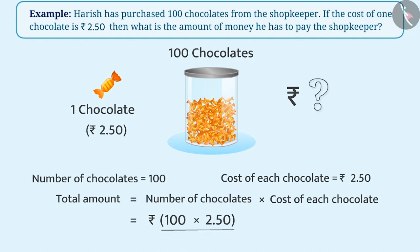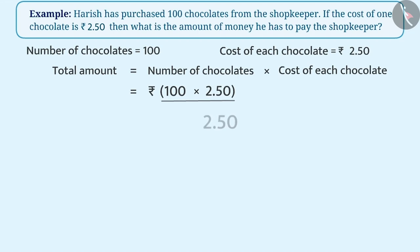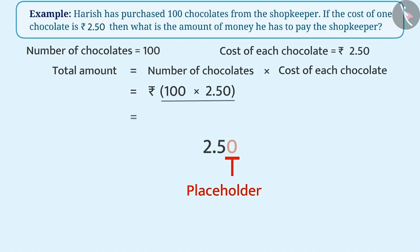Let's find the product of 100 and 2.50. In 2.50, 0 is a placeholder. Since this digit 0 is at the end of the number, we can remove it. After removing 0, the multiplication becomes 100 multiplied by 2.5.